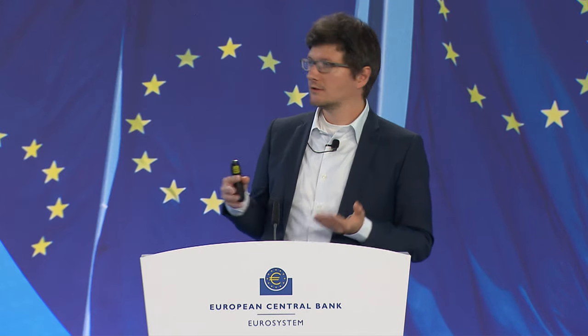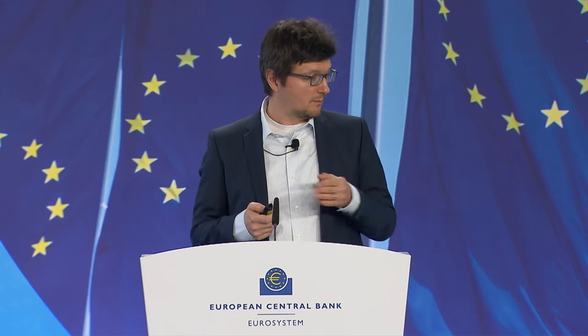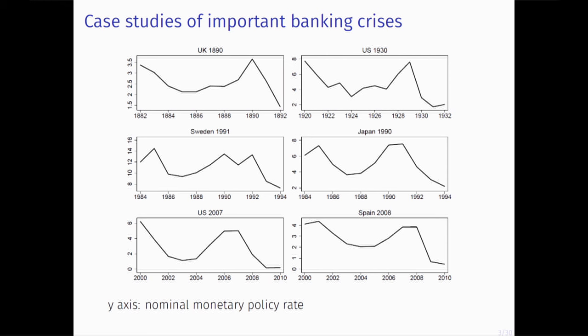When we started looking at this question more than two years ago, we noticed that case studies of important banking crises in the past show a quite consistent path of monetary policy rates. Looking at the Barings crisis of 1890 in the UK, the Great Depression, the Scandinavian and Japanese crises of the 1990s, and the global financial crisis — in all these cases you see the same monetary policy rate path: first you cut rates, then keep them low for a while, then you raise, and then you get the crisis.